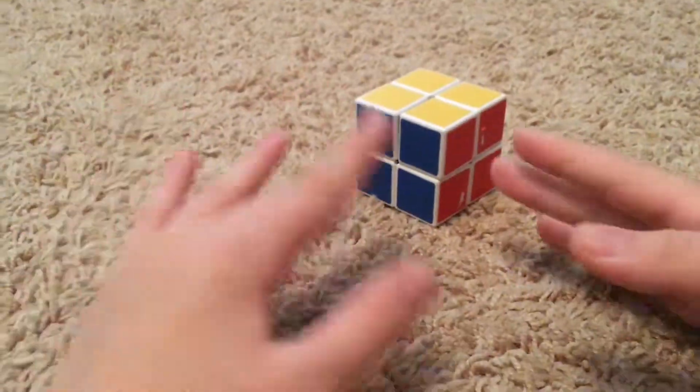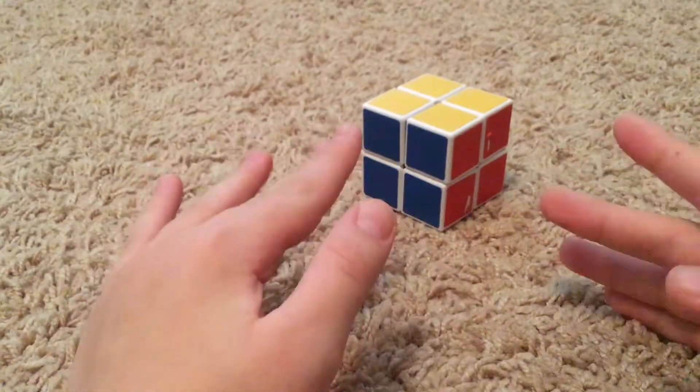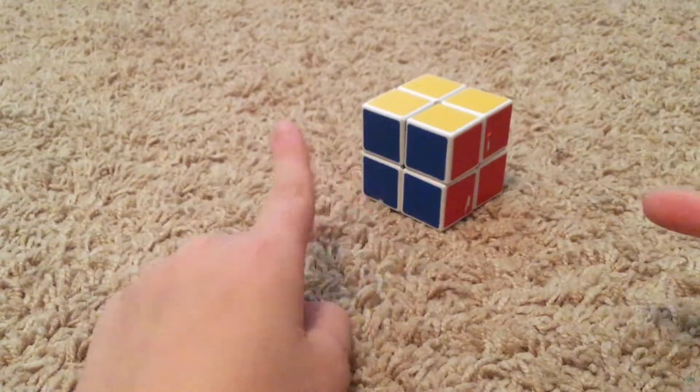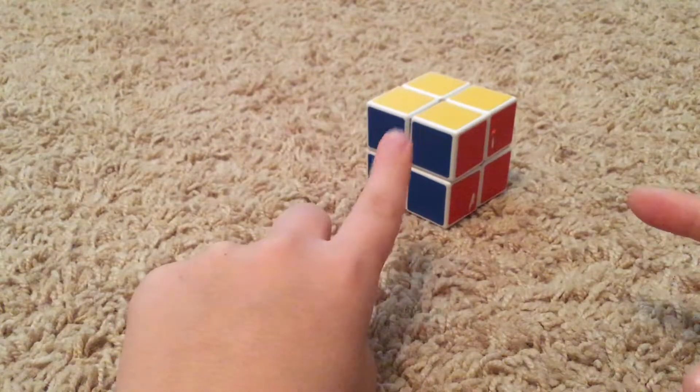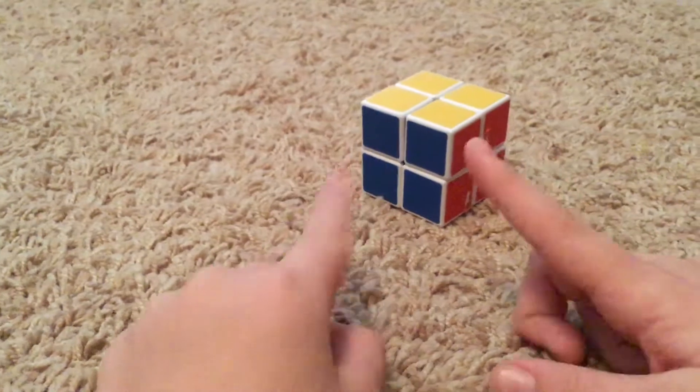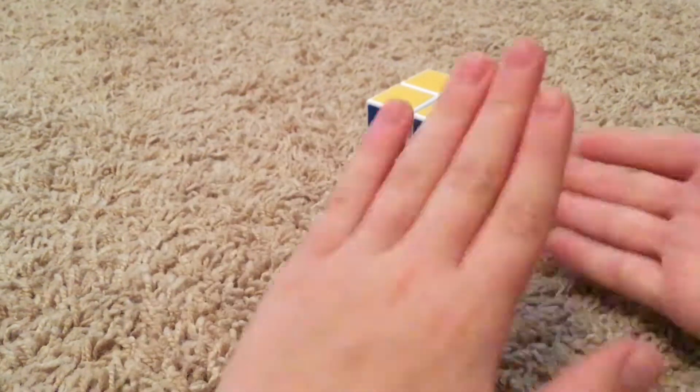And there you go, the 2x2 is now solved. And okay, no Scooby-Woo, or no 3x3 hand, no? Okay, I will see you in the next Rubik's Cube video. Peace out.